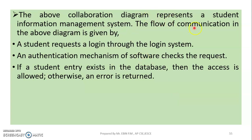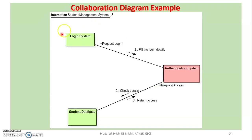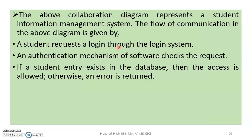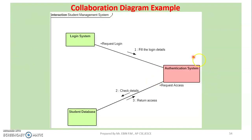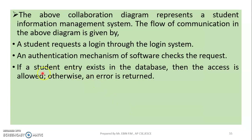The collaboration diagram represents a student information management system. The flow of communication is: first, a student requests a login through the Login System. Then an authentication mechanism checks the request. If the student entry is found in the database, access is allowed; otherwise, an error is returned.